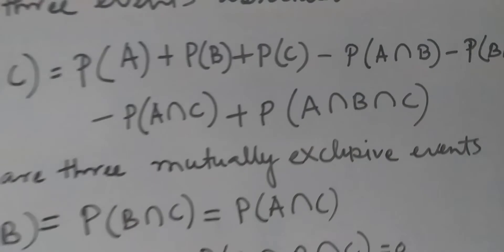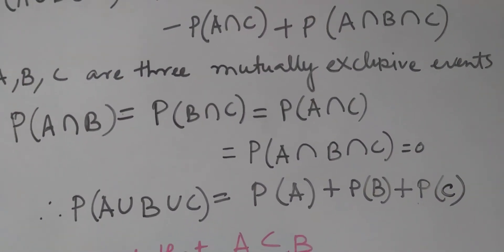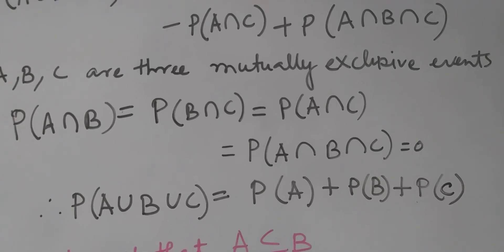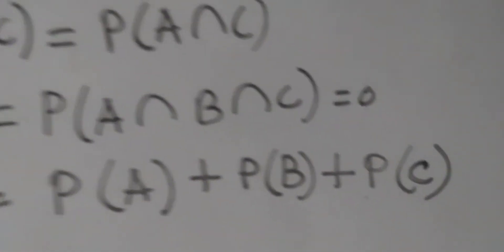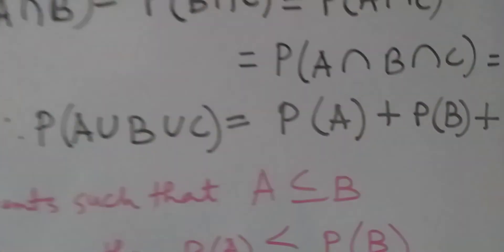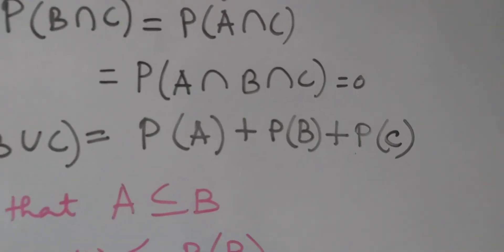If A, B, C are three mutually exclusive events, then P(A∩B) = P(B∩C) = P(A∩C) = P(A∩B∩C) = 0, and therefore P(A∪B∪C) = P(A) + P(B) + P(C).